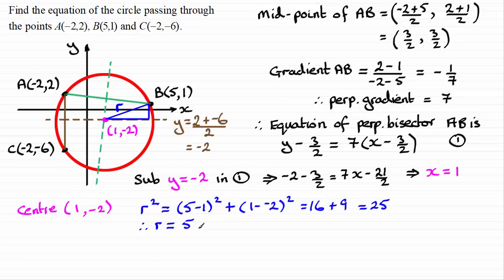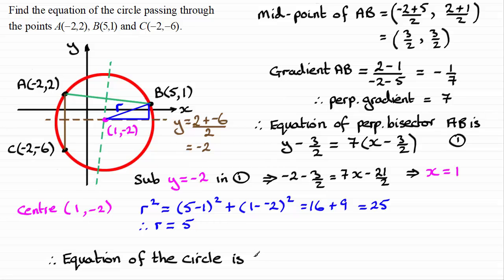Now we've got the centre and the radius, we can state the equation of the circle. Using the form (x − x₁)² + (y − y₁)² = r², we substitute the centre (1, −2) and radius 5: (x − 1)² + (y + 2)² = 25.